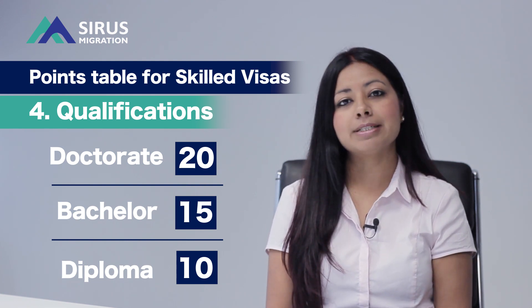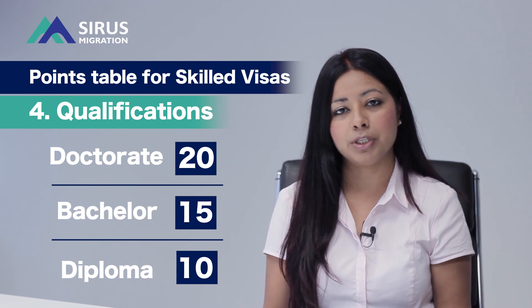The next category is your qualifications. You will get points for your highest qualification. For example, if you have done a diploma in Australia but also have a bachelor's degree from overseas, you may be able to claim points for your bachelor's, which is 15 points. Also note that the qualification does not have to be related to your nominated occupation — if your occupation is chef but you have a bachelor's in accounting, you can still claim 15 points.